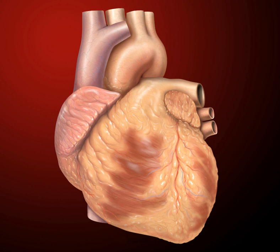The signal then travels along the bundle of His to left and right bundle branches through to the ventricles of the heart. In the ventricles, the signal is carried by specialized tissue called the Purkinje fibers, which then transmit the electrical charge to the heart muscle.